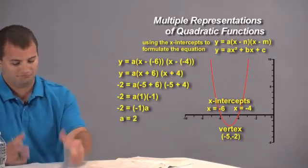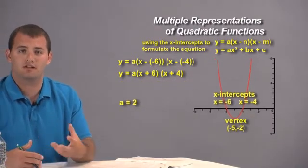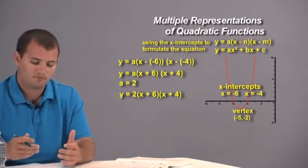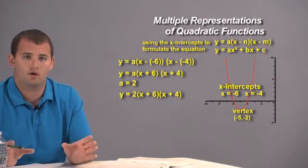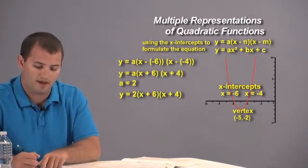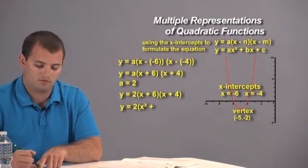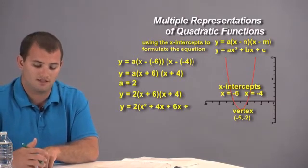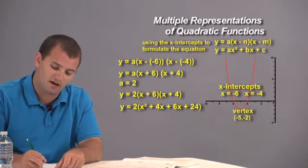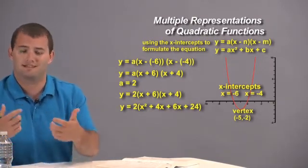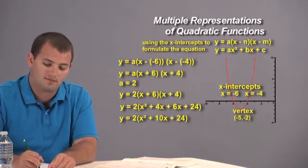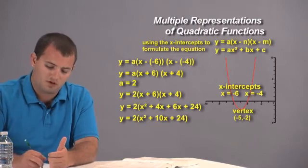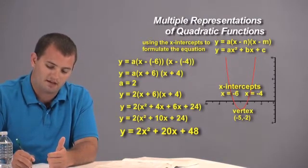Dividing by negative 1, we find that a equals 2. Now we plug this into our equation: y equals 2 times (x plus 6) times (x plus 4). We FOIL the binomials — first, outer, inner, last — getting x squared plus 4x plus 6x plus 24. Combining like terms inside gives x squared plus 10x plus 24. So our equation becomes y equals 2 times (x squared plus 10x plus 24), and distributing the 2 gives us y equals 2x squared plus 20x plus 48.